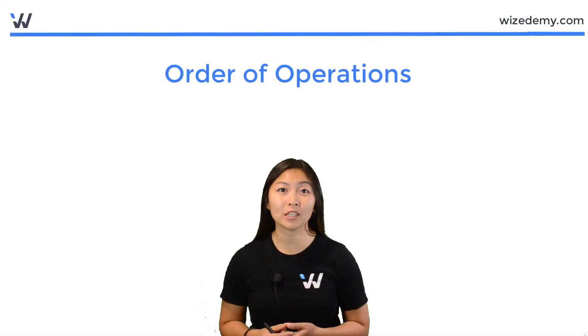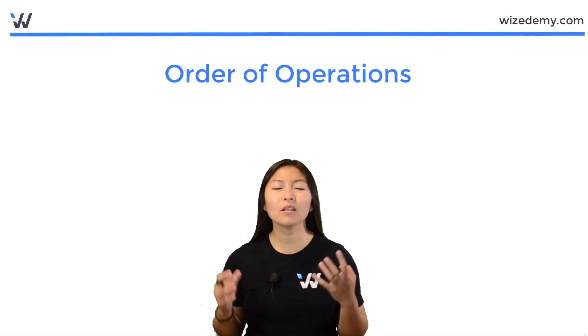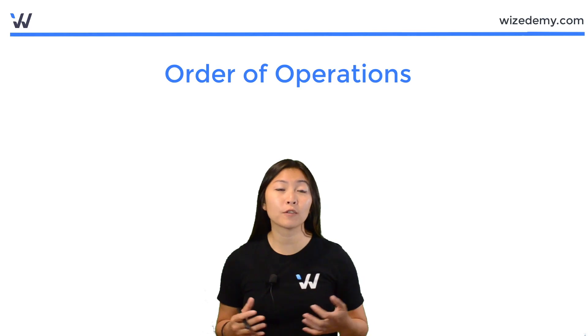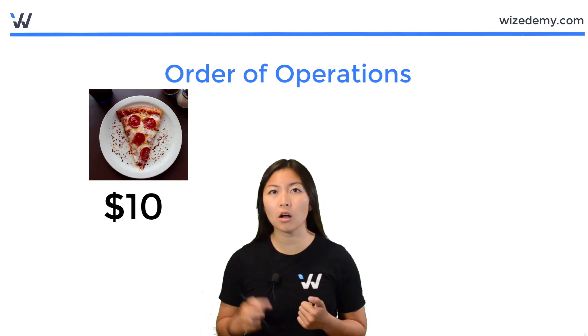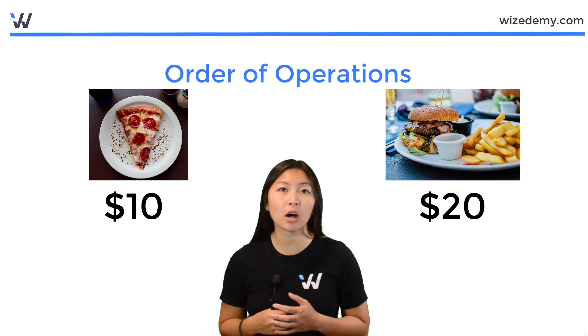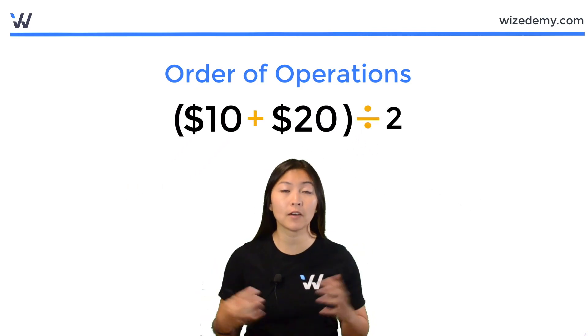Let's talk about order of operations. What is it? Well, imagine you and your best friend go to the food court. You buy a meal, it's $10. She buys a meal, it's $20, and you want to split the cost. So 10 plus 20 divided by 2.